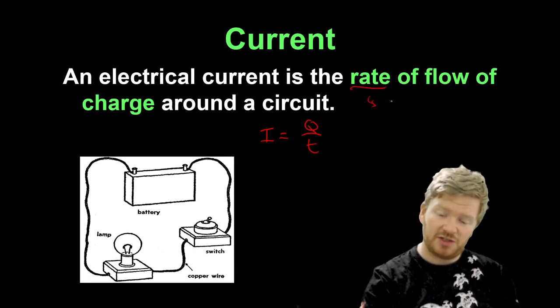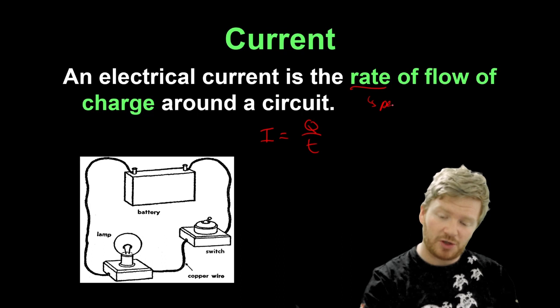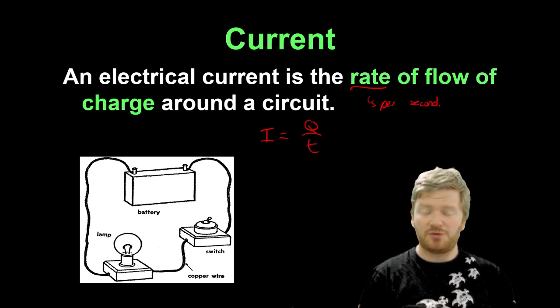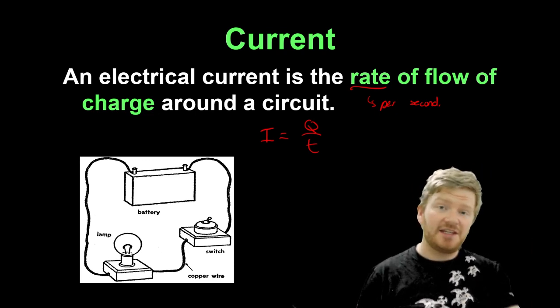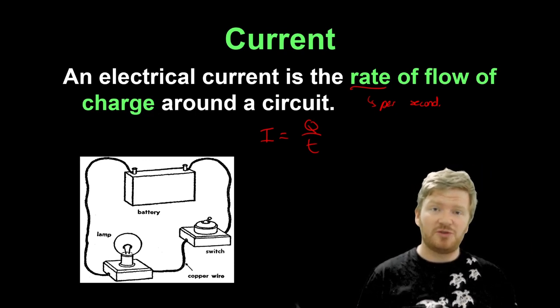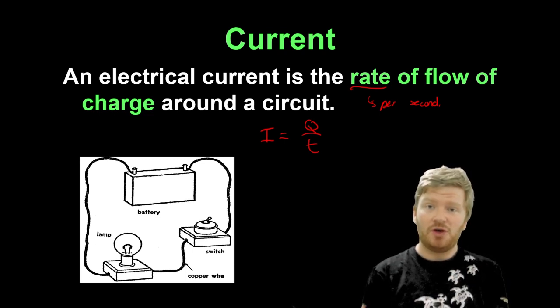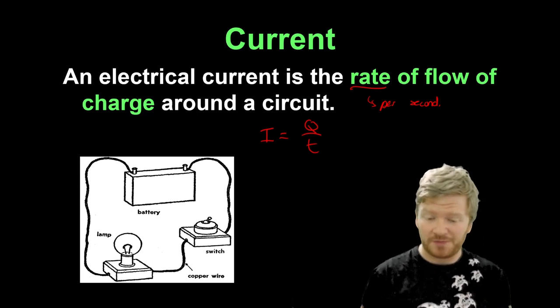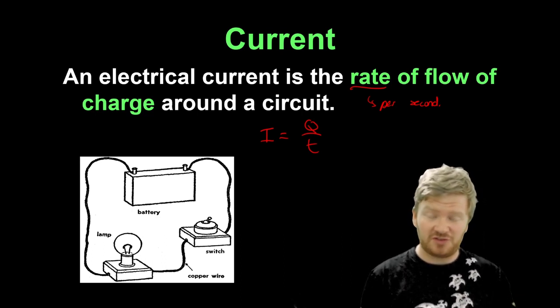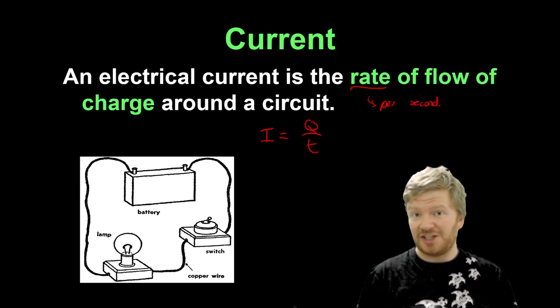So a rate of, usually in anything in physics, means per second. Just another little reminder, in case you can't remember from IGCSE, we always use the symbol I for current. And again, a little bit of a history lesson. The reason for that is we used to say that current was the intensity of the quantity of charge. That's where the I and the Q come from. We just haven't changed it because physicists are loath to ever change anything.